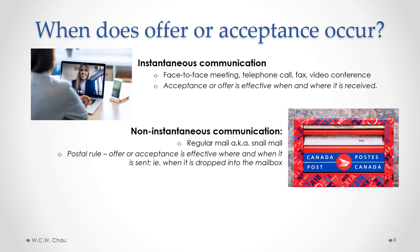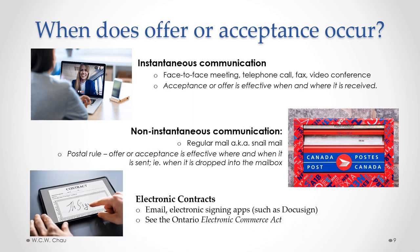The postal rule says an offer or acceptance is effective where and when it is sent — meaning the time at which the letter is dropped into the mailbox. When dealing with electronic contracts — whether by email or through an app for the electronic signing of legal documents, such as DocuSign — we need to look at specific rules in the Electronic Commerce Act.